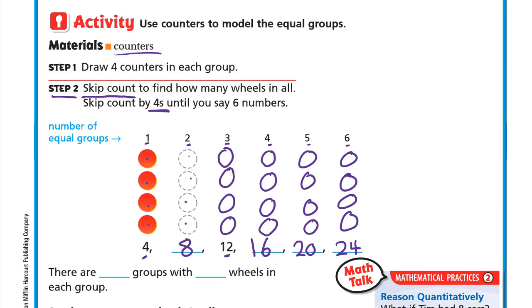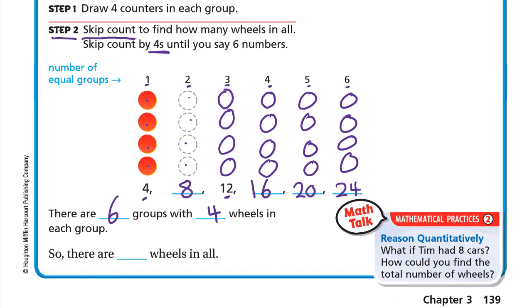So skip counting by fours gives us: 4, 8, 12, 16, 20, 24. There are six groups with four wheels in each group, so there are 24 wheels in all.